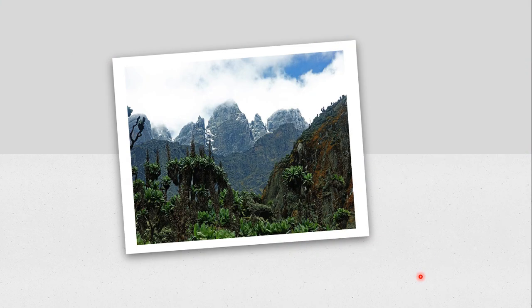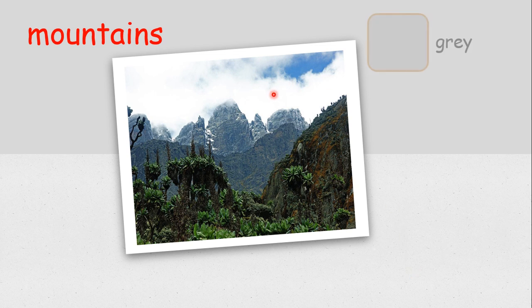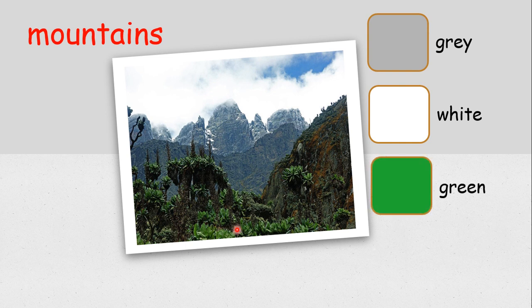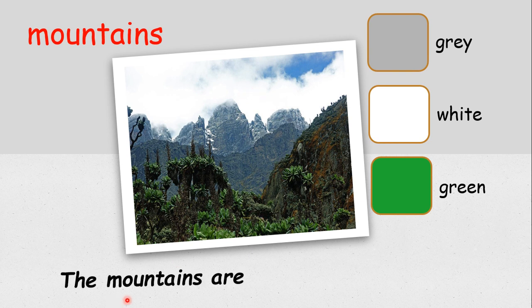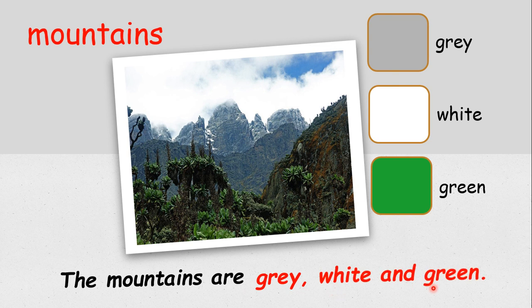Let's look at the last habitat. This is the mountains. So what are the colors of the mountains? Gray, white, and green. The mountains are gray, white, and green.